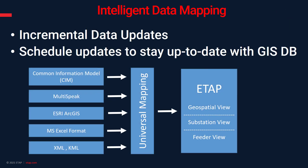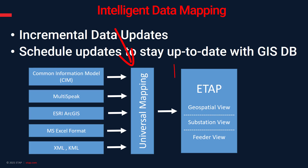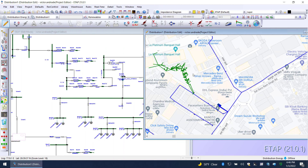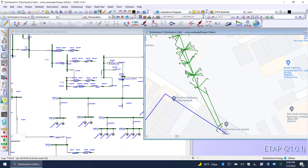How the intelligent data mapping works: the various sources are on the left-hand side. There is a universal mapping tool that bridges the data from the source — whether it's CIM, Multispeak, Excel, or ESRI GIS — through a universal mapping utility. ETAP then generates both the geospatial view as well as the substation view and the network view shown earlier.